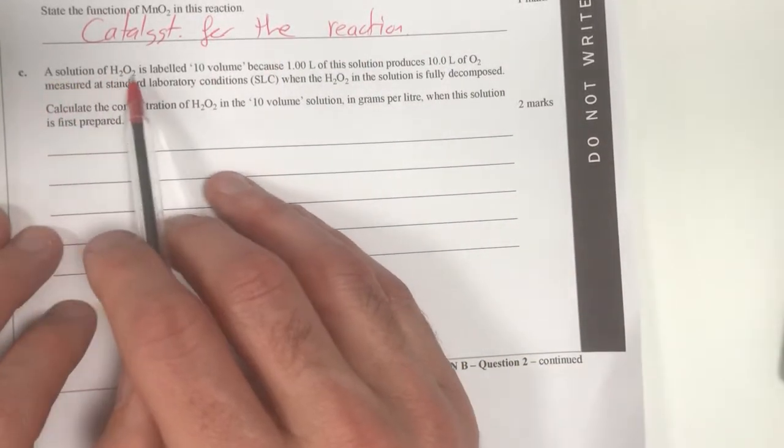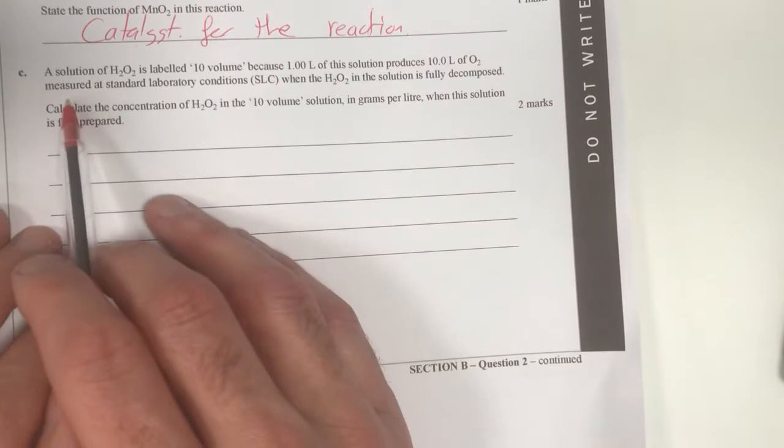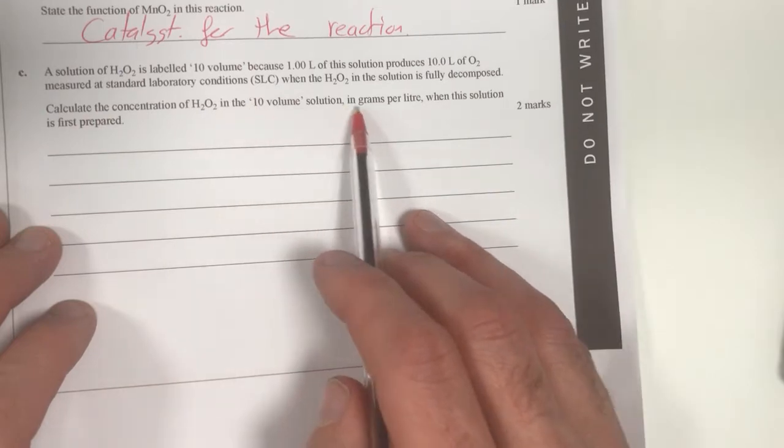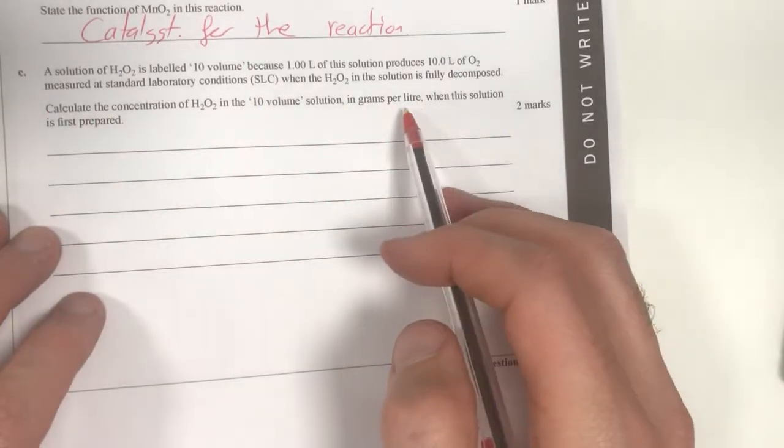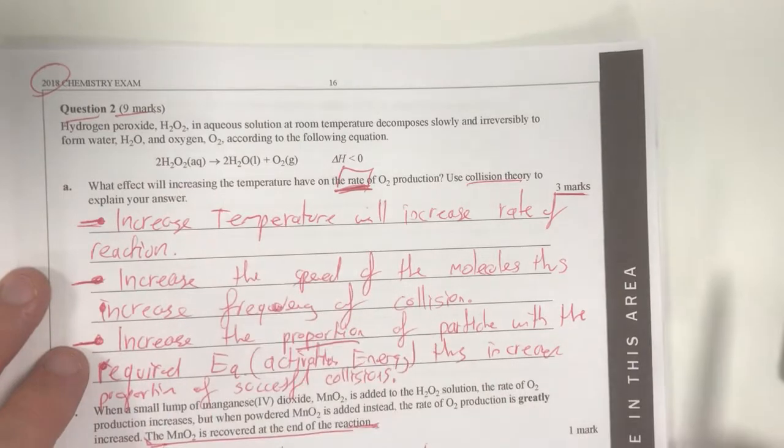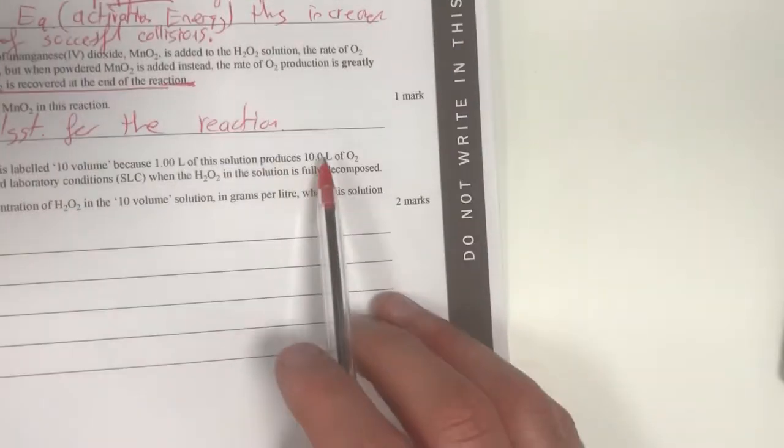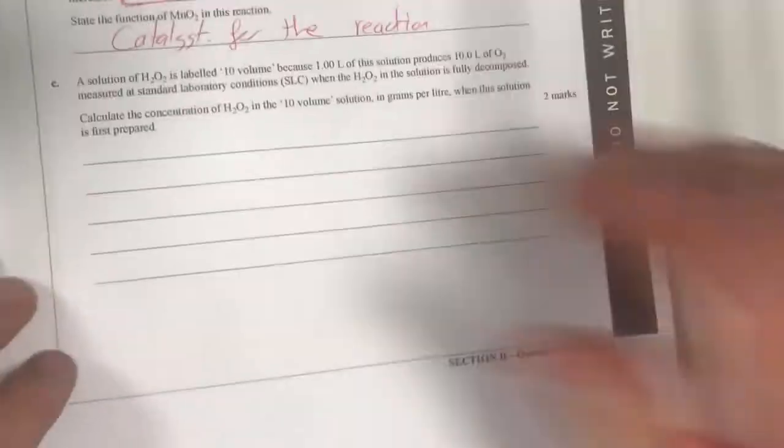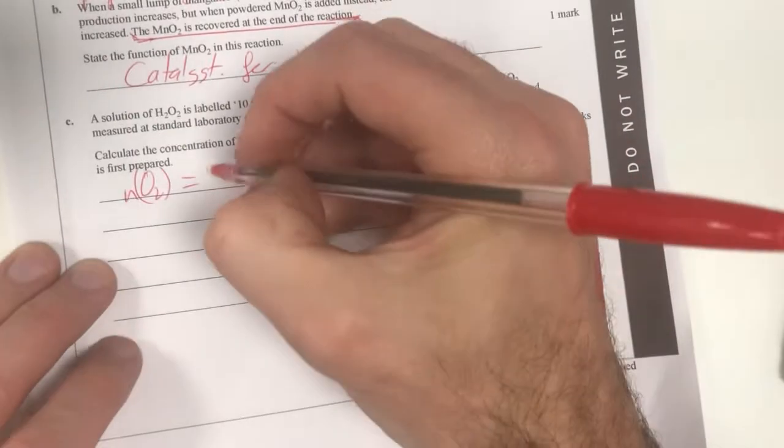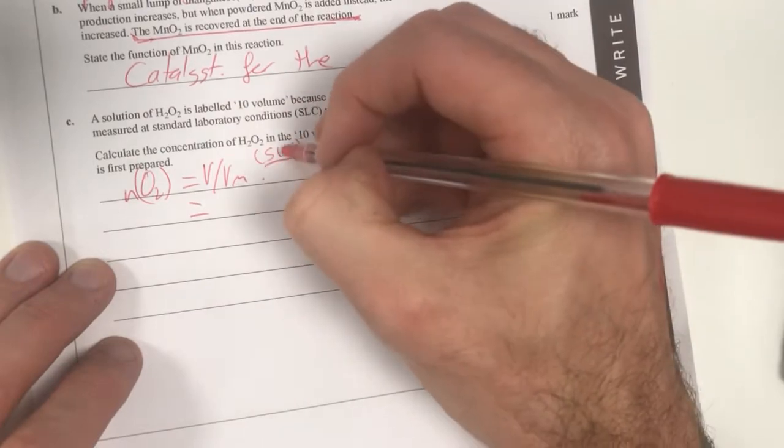Part C. A solution that is labeled 10 volume, because one litre of this solution produces 10 litres of O₂ gas at SLC. Calculate the concentration of H₂O₂ in the 10 volume in grams per litre when this solution is first prepared. So what do we need to know here? Obviously we need to know the grams of my hydrogen peroxide. I know I've got a litre of aqueous solution, but I've also got 10 litres of oxygen gas.